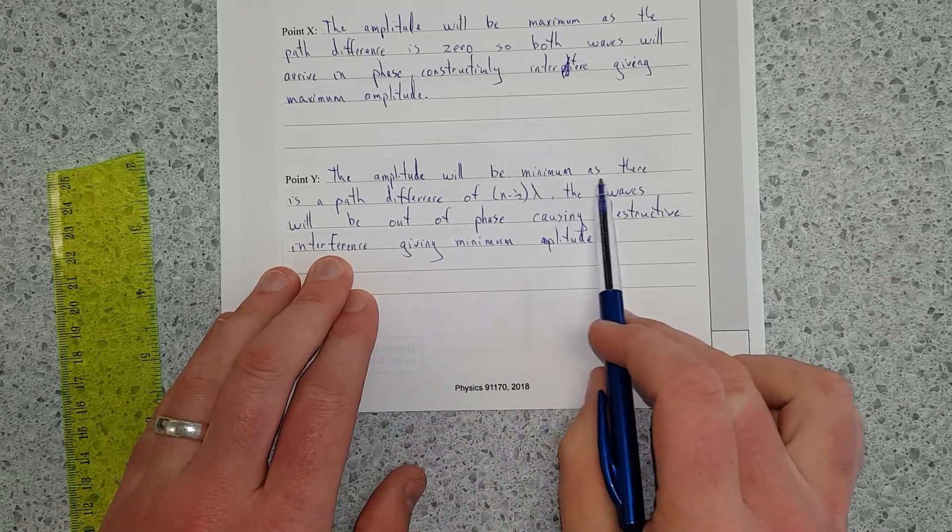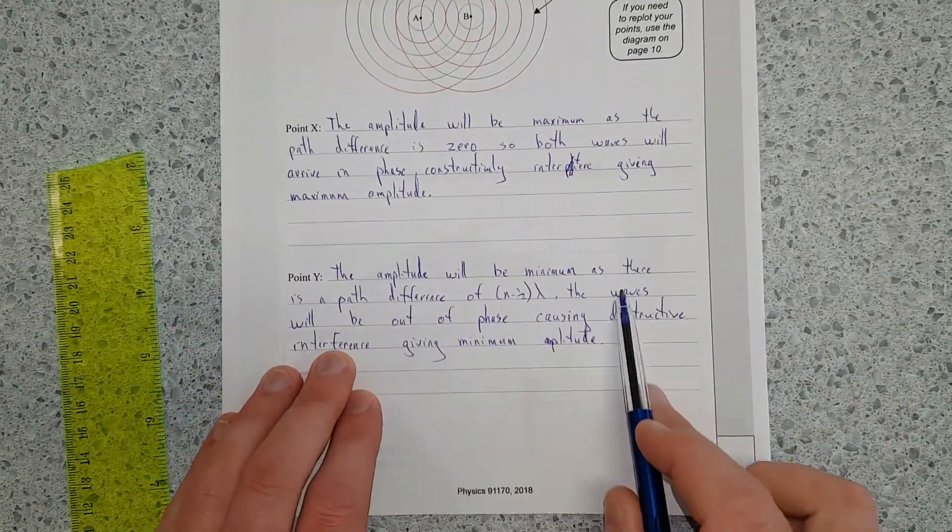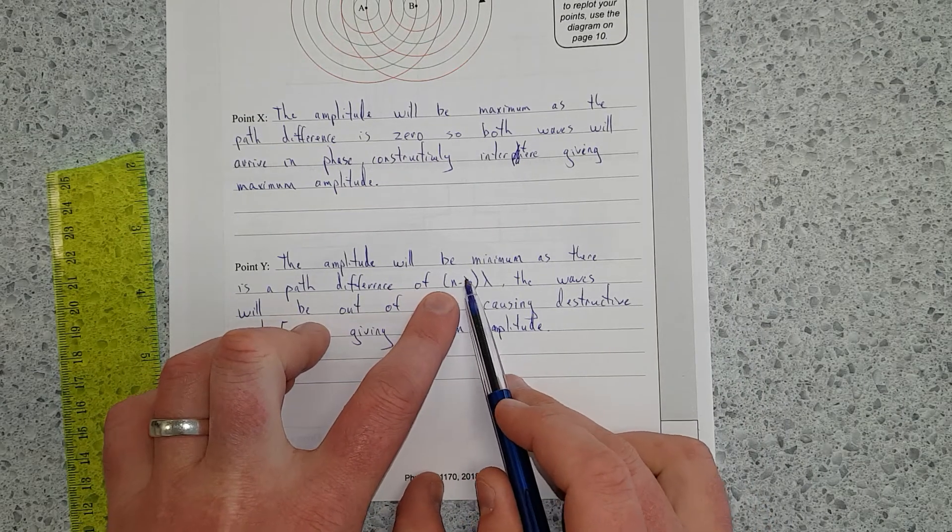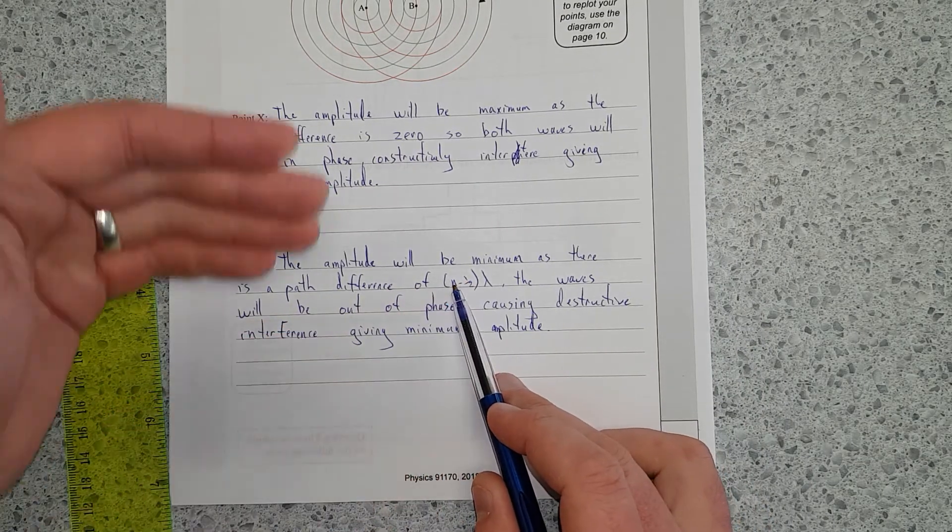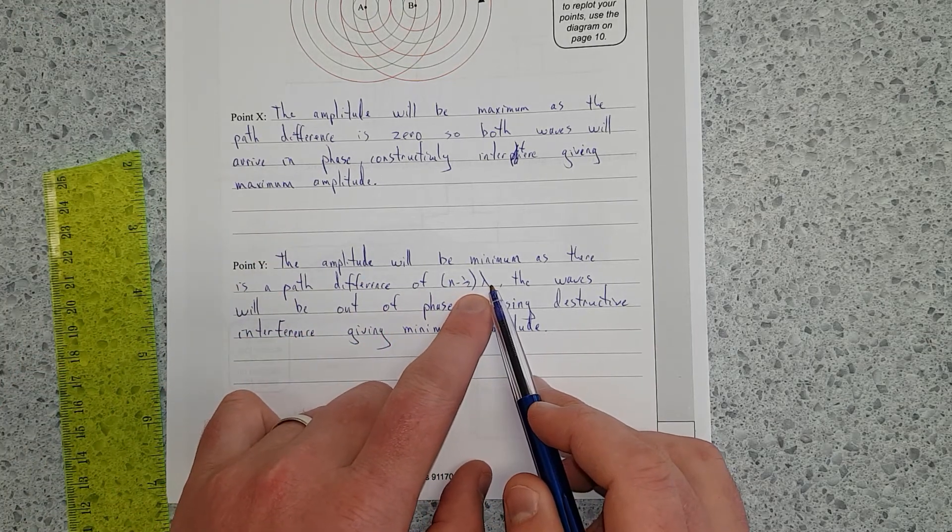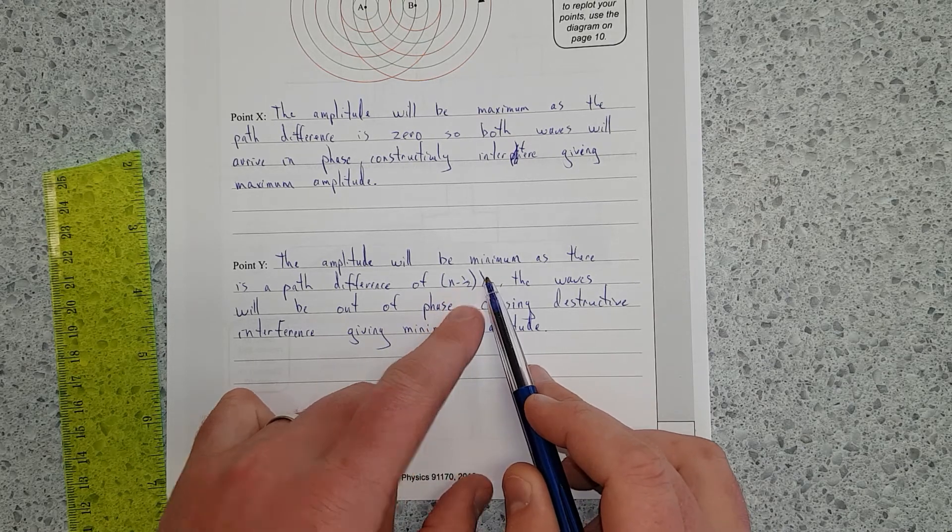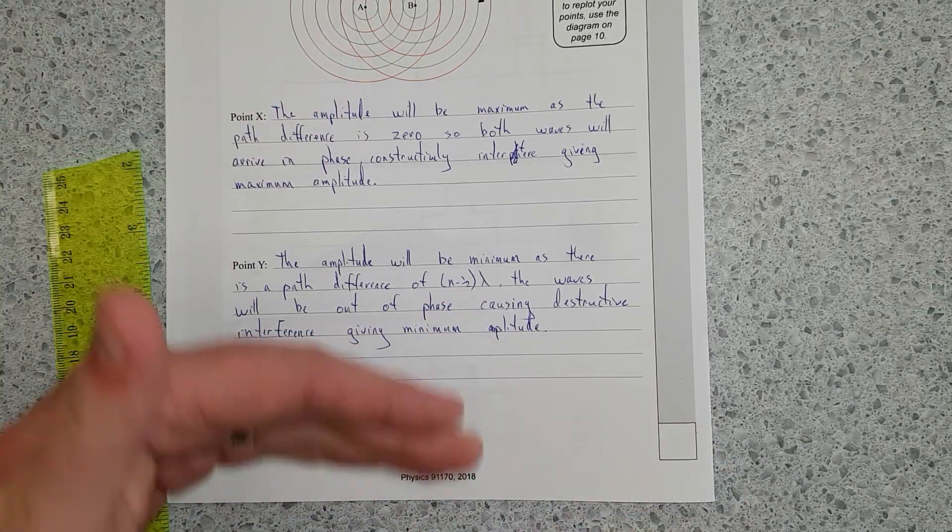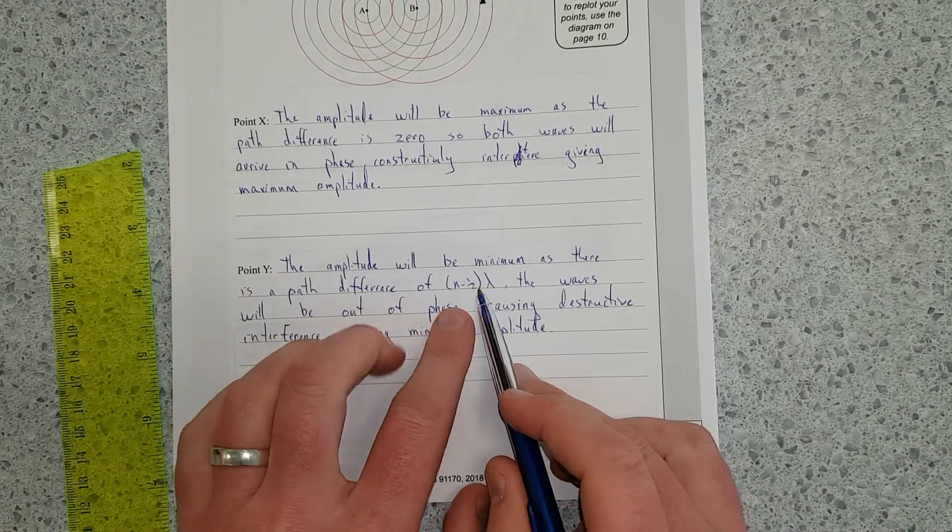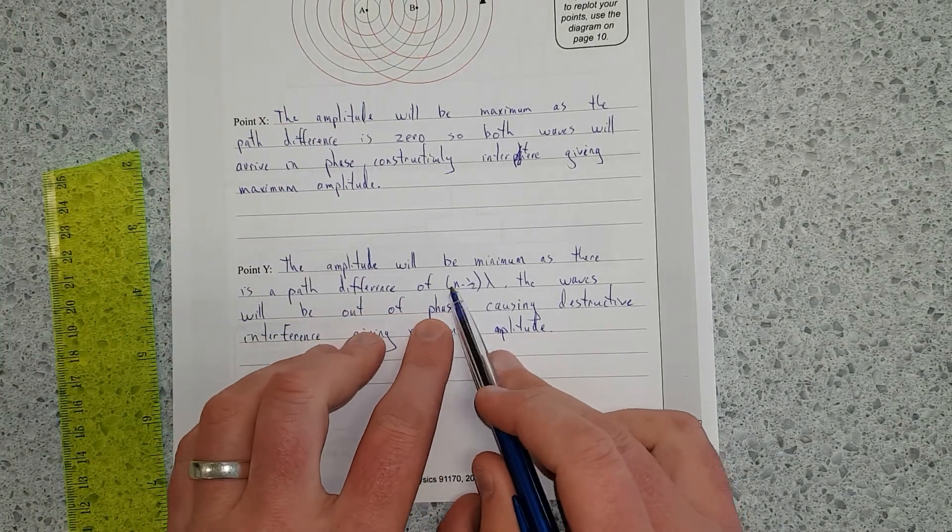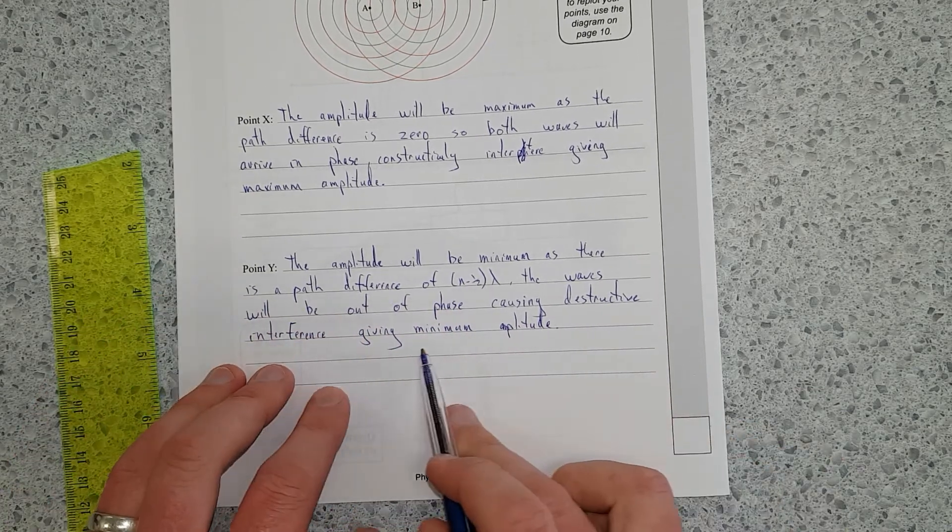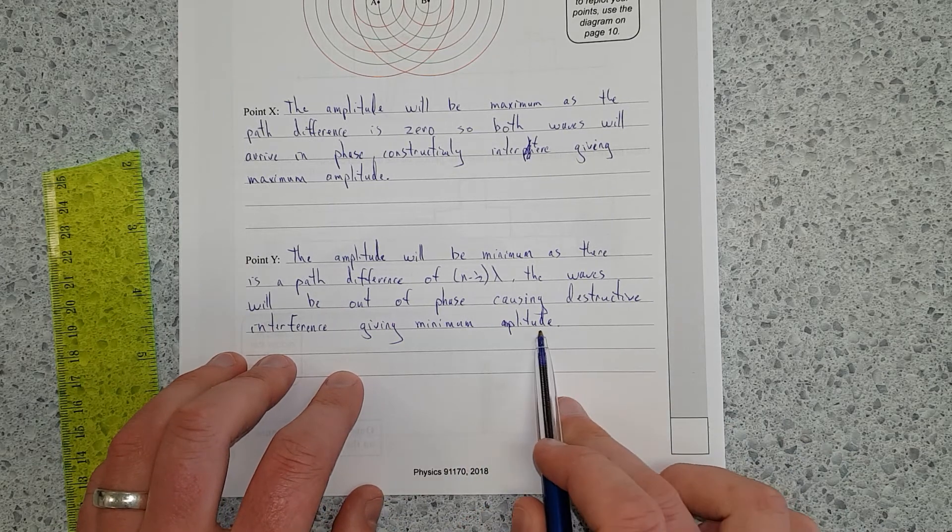The amplitude will be minimum. So at point Y, the amplitude will be minimum because there's a path difference of, and I've written sort of the actual formula, it's N minus a half. N is just how many waves you took to get there, times a wavelength. So that tells you, or N is just a number. If you times it by the wavelength, it gives you the actual distance. Because it was like four waves and the wavelength's two metres, four times two gives you eight whole metres to get there. So we've got a path difference of sort of a half a wave. The waves will be out of phase exactly, causing destructive interference, giving minimum amplitude.